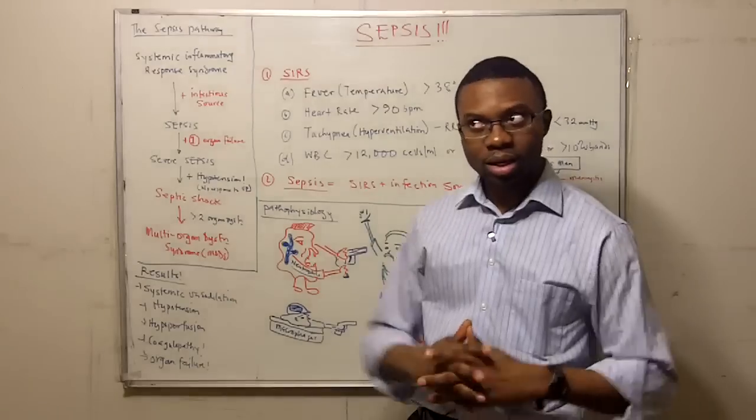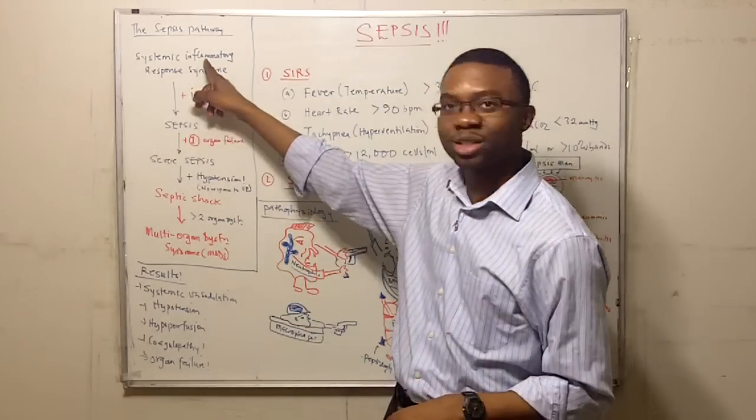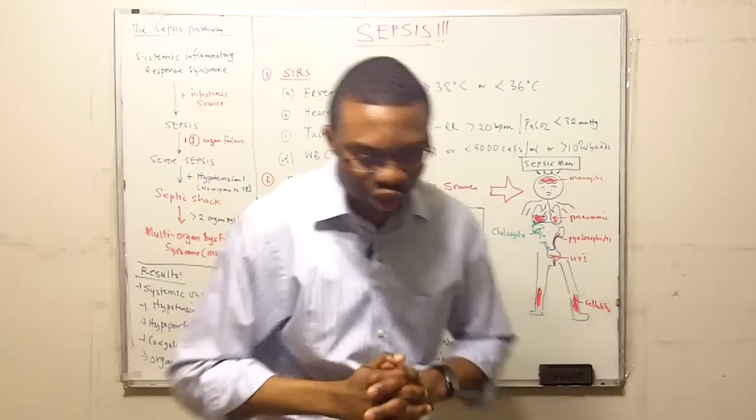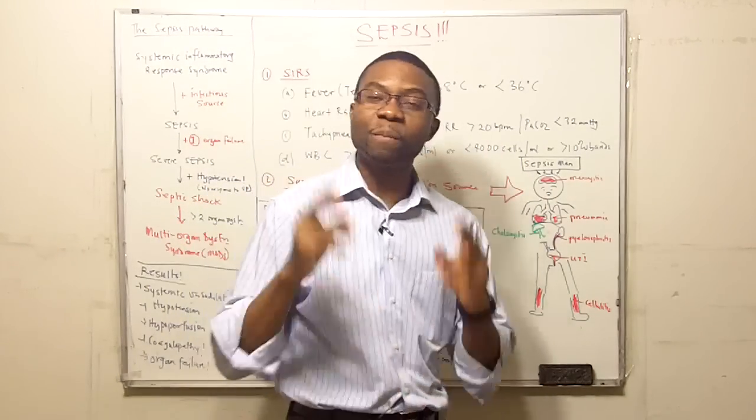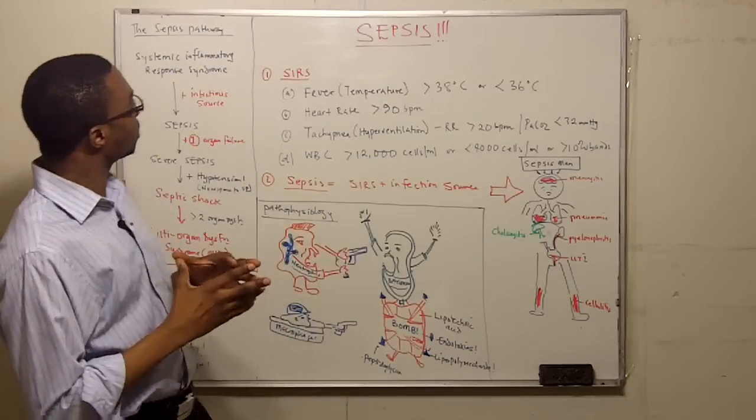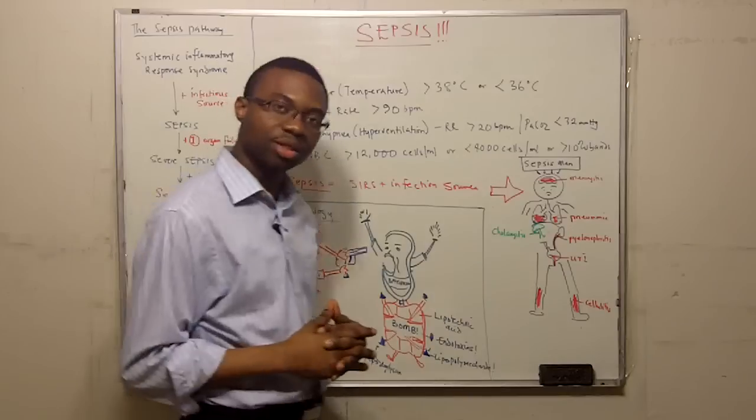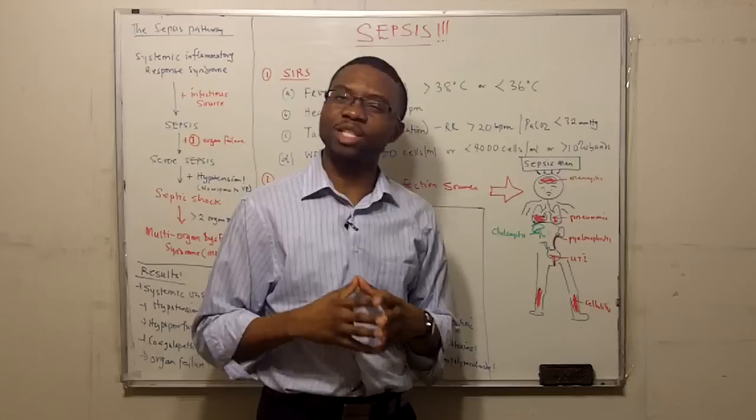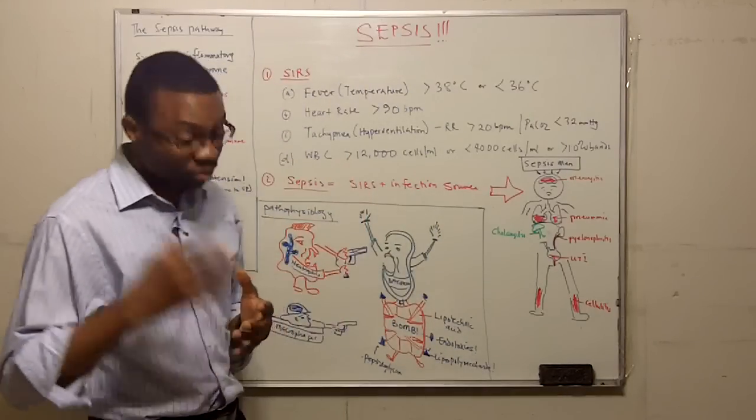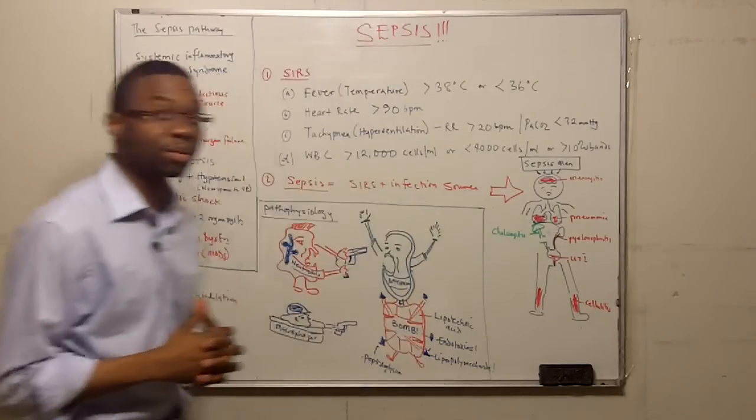We're going to start with a systemic inflammatory response, SIRS syndrome. The entire system is affected. What is the definition of SIRS? You have to meet at least two criteria of the following. But before we explain, we need to explain what SIRS really is, and that's going to start with the pathophysiology of sepsis.